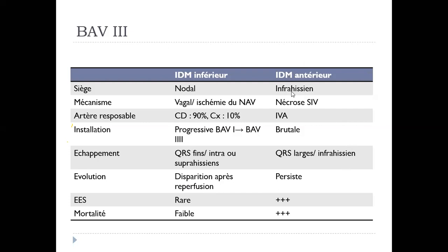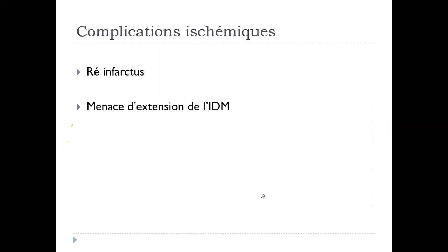Les complications rythmiques incluent aussi les troubles de la conduction : bradycardies sinusales, blocs de branche et blocs atrioventriculaires. Les BAV en rapport avec un EDM inférieur ont un siège généralement nodal, leur mécanisme dans 90% des cas est vagal, progressifs du BAV1 jusqu'au BAV3, ils disparaissent après la reperfusion, répondent à l'atropine et la mortalité est faible. Pour l'EDM antérieur, le BAV est brutal, en rapport avec la nécrose du septum antérieur, il persiste même après la reperfusion et on a toujours besoin d'un centre d'entraînement électrosystolique.